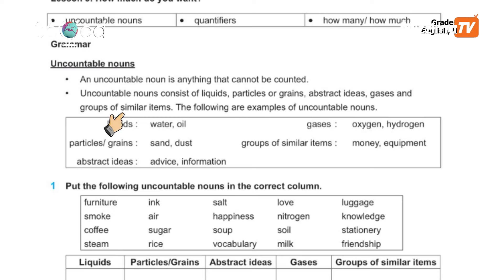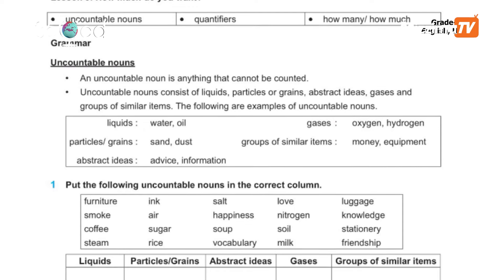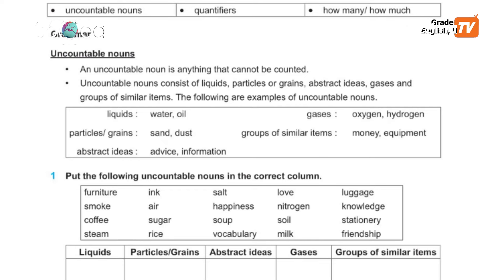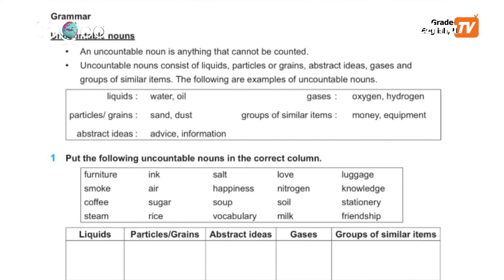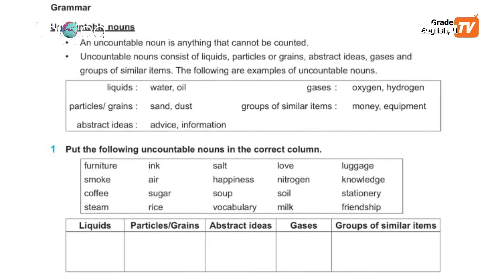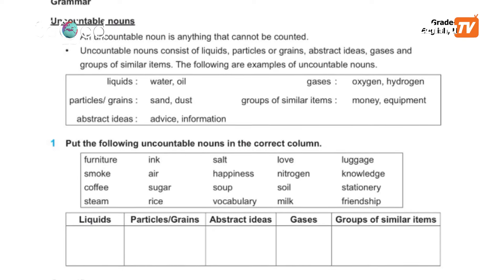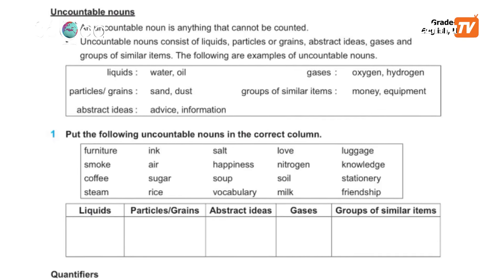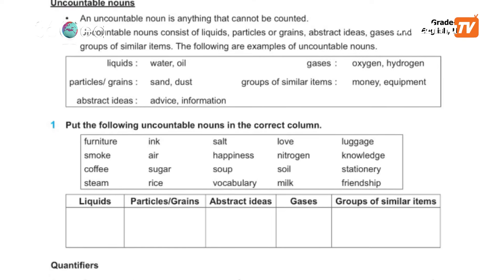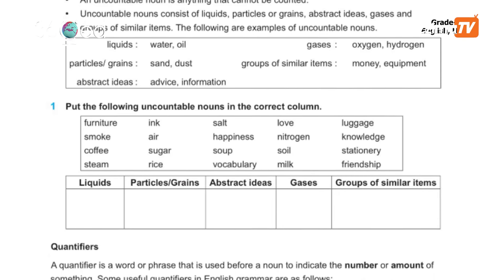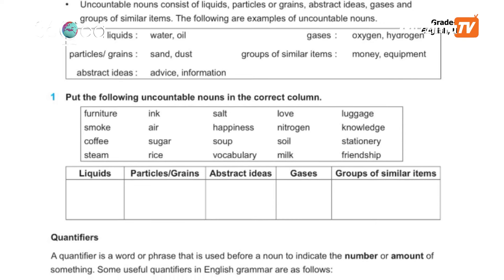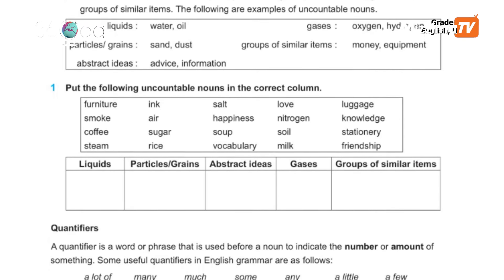The following are examples of uncountable nouns. Liquids. Particles or grains are sand, dust, rice, or flour. Abstract ideas include advice or information. Gases are oxygen and hydrogen. Groups of similar items include money and equipment.